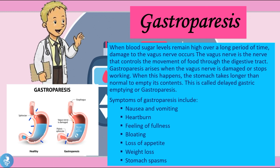If the stomach is unable to contract to push food out, there is delayed gastric emptying. Normally the stomach contracts at various points to push contents into the intestine, but when the vagus nerve is damaged those contractions don't occur. Patients with gastroparesis usually suffer from nausea and vomiting, heartburn, a feeling of fullness, bloating, loss of appetite, weight loss, and stomach spasms.